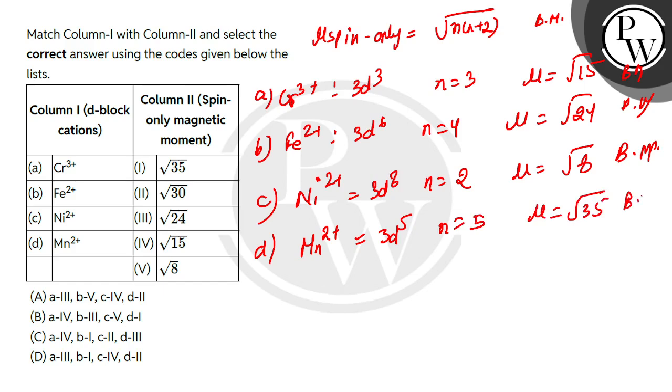So match kya hoga: a ka match ho jayega aapka 4 ke saath me, b ka match ho jayega 3 ke saath me, c ka match ho jayega 5 ke saath me, and d ka match ho jayega 1 ke saath me. So aapka correct option kya ho jayega: 4, 3, 5, 1, yarni ki option B correct hoga.